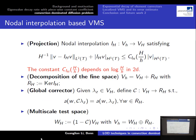First we need to define the projection, and here we will use the nodal interpolation. The nodal interpolation has this approximation property and stability estimate for each element T. I want to emphasize the constant C_{IH}: it depends on the logarithm of H over h in two-dimensional problems, and in 3D it depends on the ratio between H and h. This is the reason we restrict our method to the two-dimensional problem.